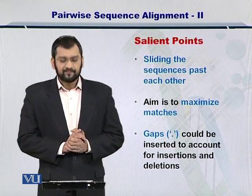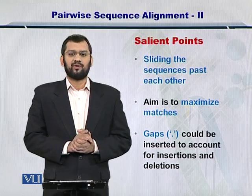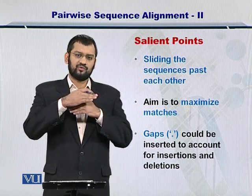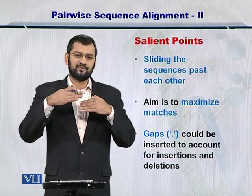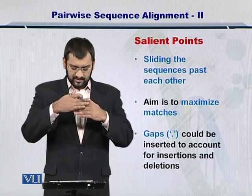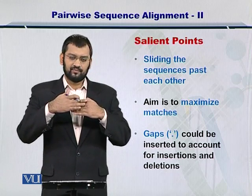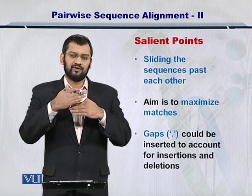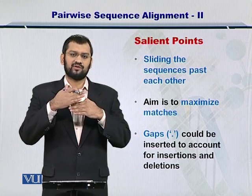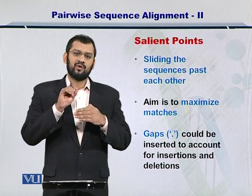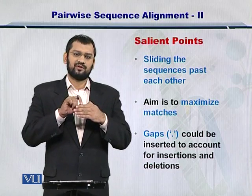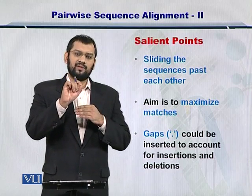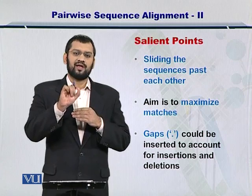The process starts with sliding the two sequences against each other. Once you do that, you try to maximize the matches between the two sequences. During this maximization, if there is an extra amino acid or nucleotide in one sequence, then in the corresponding sequence you place a dot. This is called a gap.